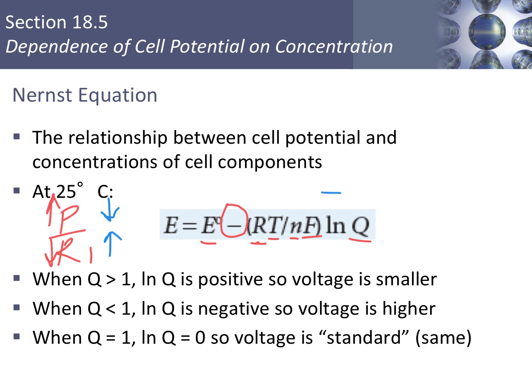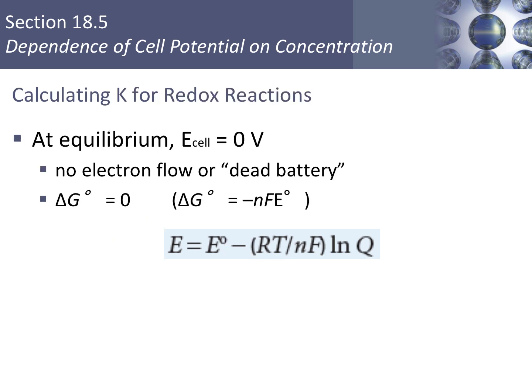When Q equals 1, the natural log of 1 equals 0, so voltage would not change — it remains at the standard value. Since we are talking about Q, let's now talk about K for redox reactions — the equilibrium constant.